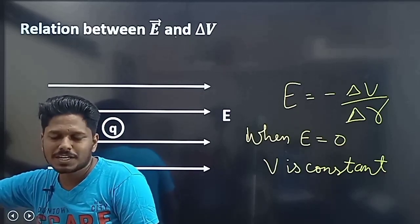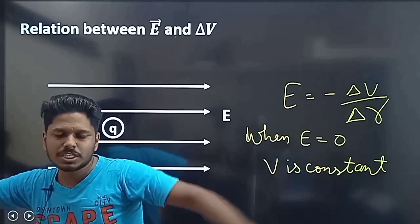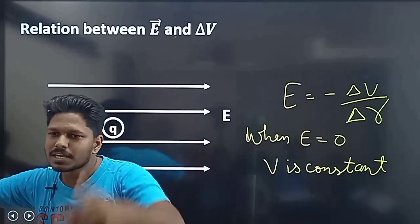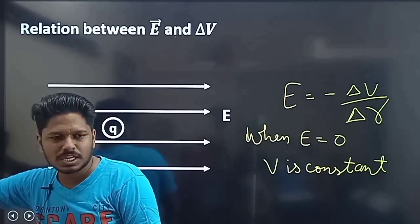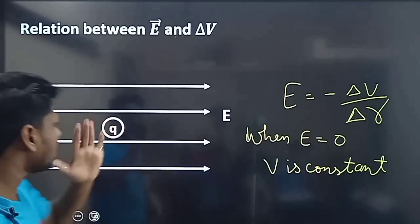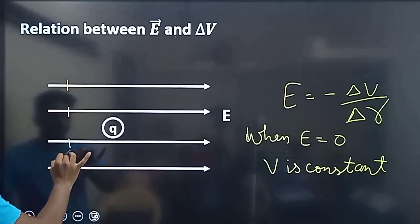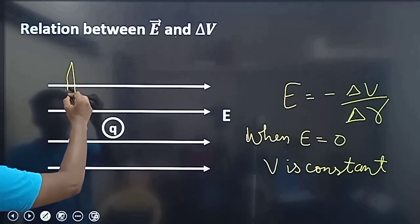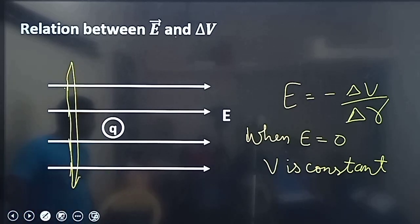E0, E0, E0 — how is it? Constant. Then Gaussian shell — how is it? Constant throughout. So in all points, the potential is equal.